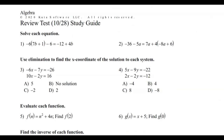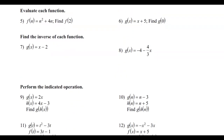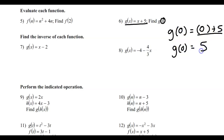Let's take a look at number 6. The directions are just to evaluate — all that means is you're going to plug this number in for x into this equation. I'm going to take my g of x equation and replace the x's with a zero. And zero plus five, as you know, is just five. So that's pretty straightforward there.